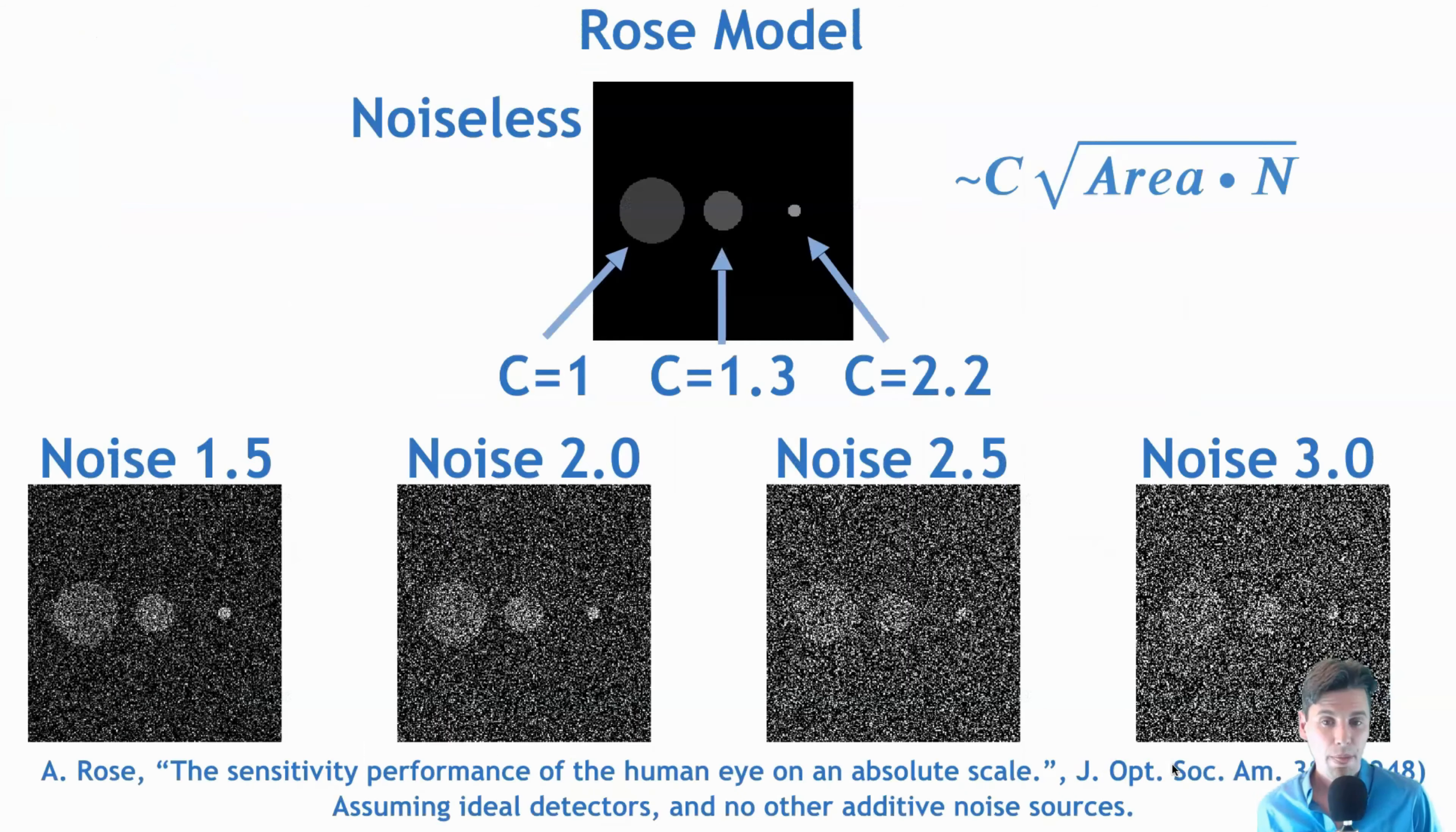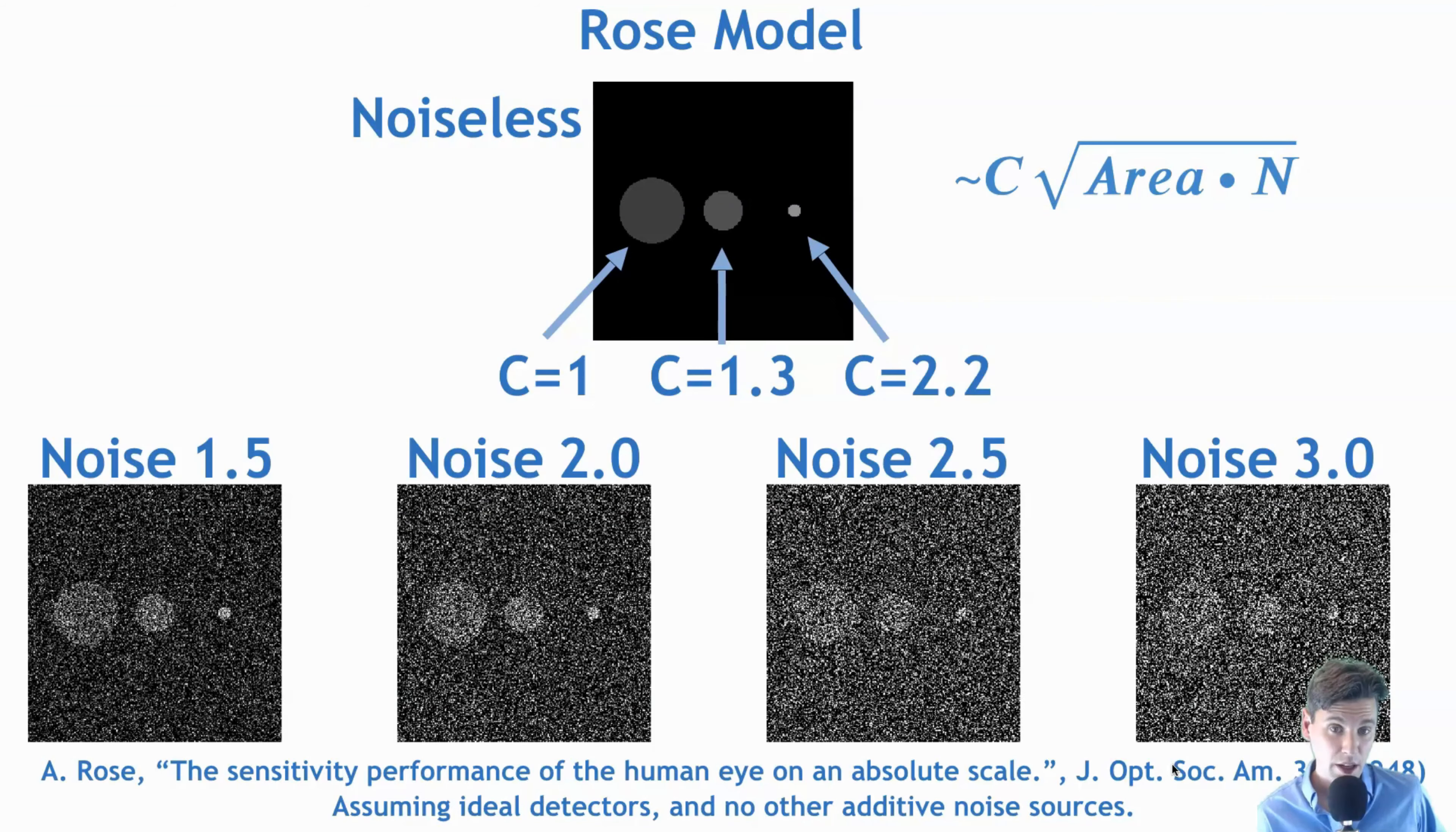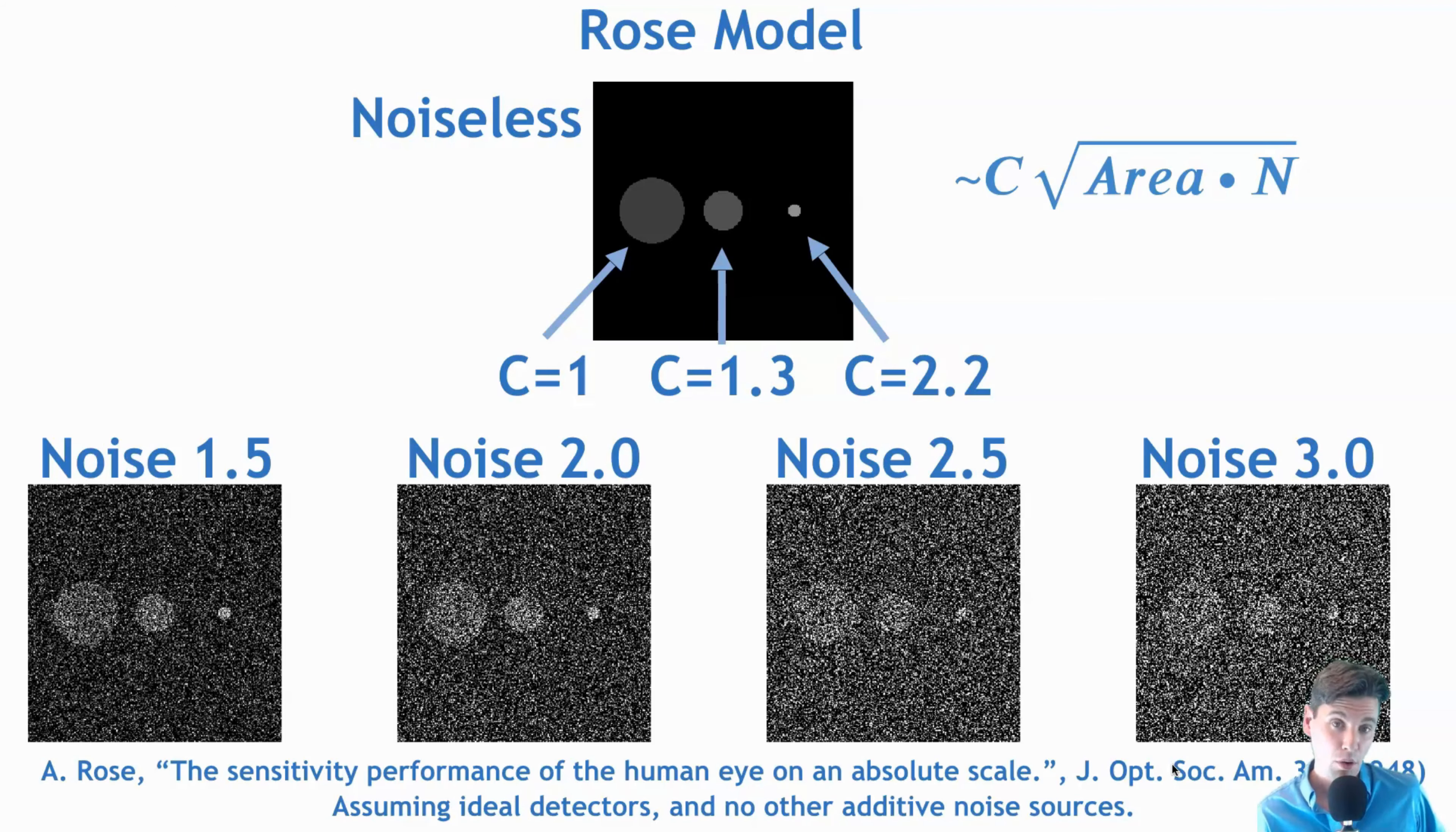So Albert Rose did a study in the 1940s and published what's called the Rose model, where our visual system, the SNR of our visual system, goes like the contrast of the lesion, and then also like the square root of the area of the lesion here.